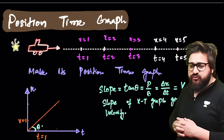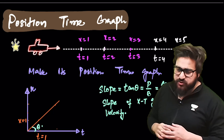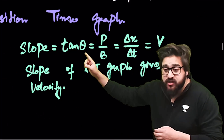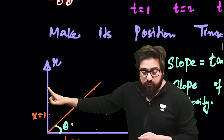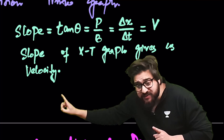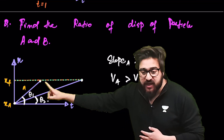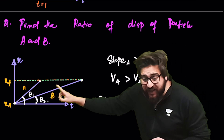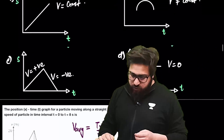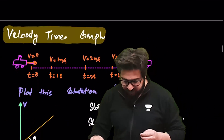The position-time graph: if a car moves uniformly, its position increases linearly with time — at t = 1 its position is 1, at t = 2 it's 2, at t = 3 it's 3 — giving a straight line. The slope of the position-time graph is tan θ = Δx/Δt, which equals velocity. So the slope of the position-time graph gives velocity. If slope of A is greater than slope of B, then velocity of A is greater than velocity of B.